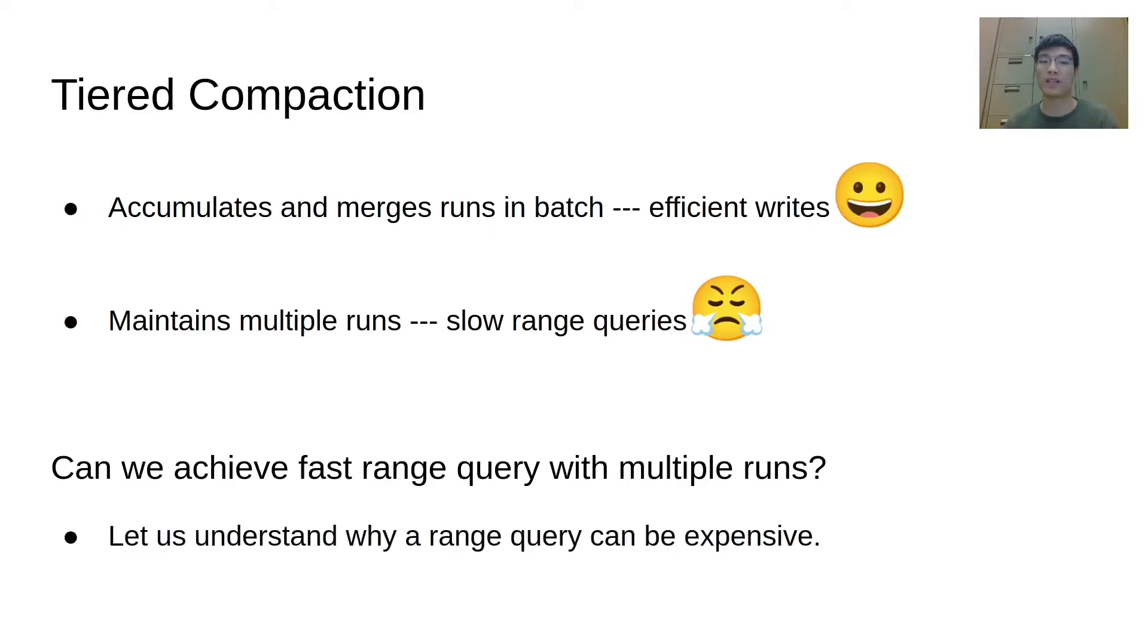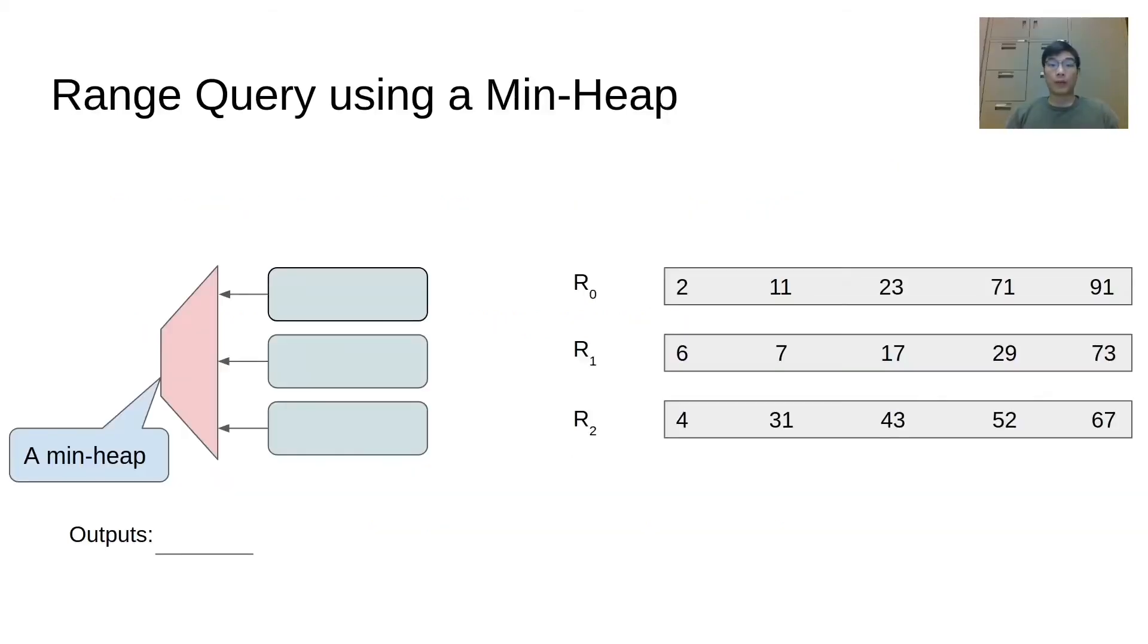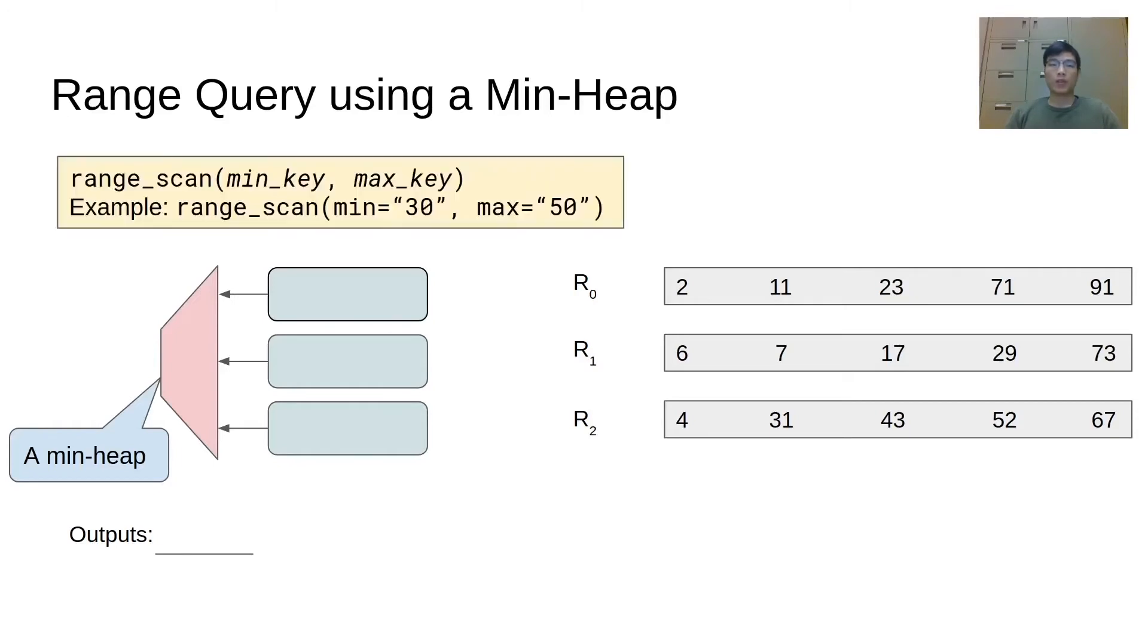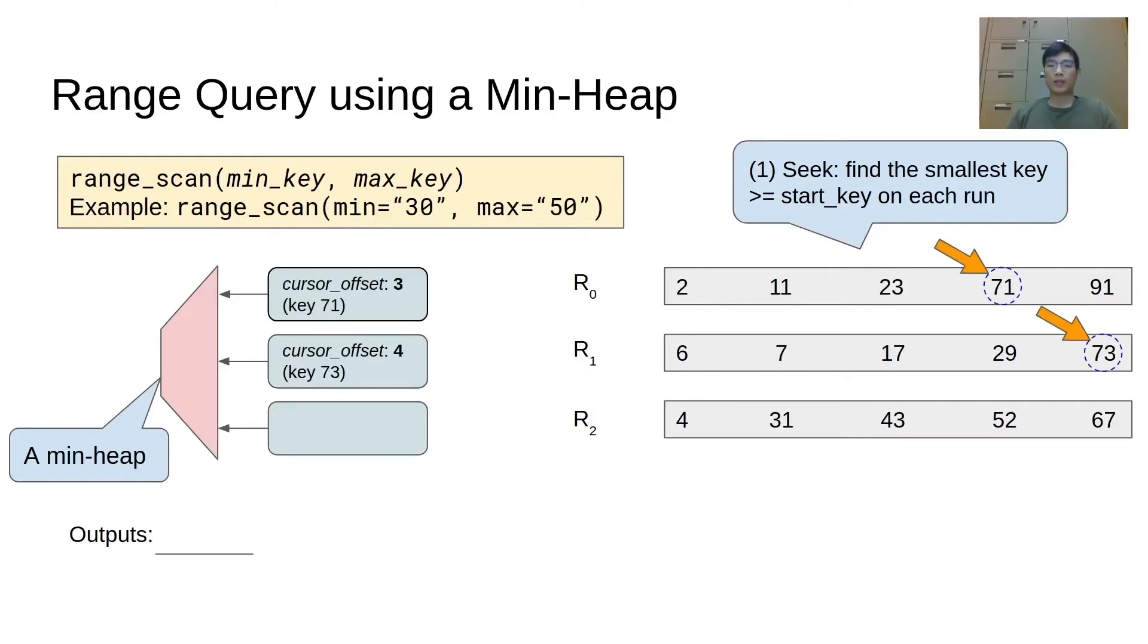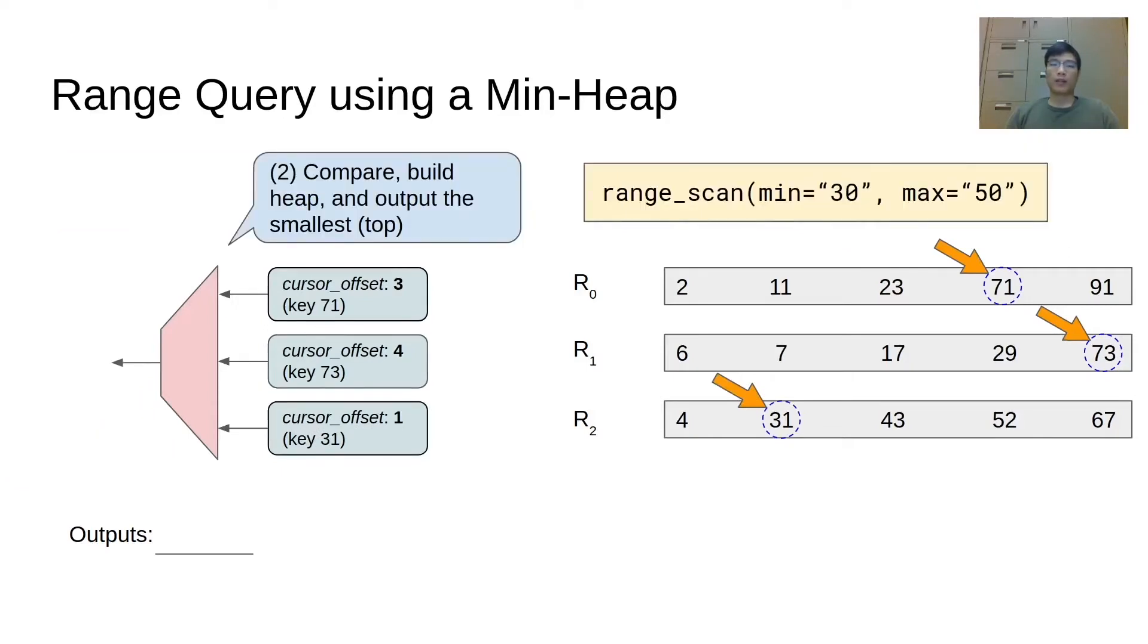First of all, let's see why a range query could be expensive using a min-heap merging iterator. Let's say we have three sorted runs. Those numbers represent the keys on the runs. So here we are showing an example of range query that retrieves the keys between 30 and 50. The first step is to seek on each run with a binary search so that the cursor would point to the smallest key that is greater than or equal to the start key.